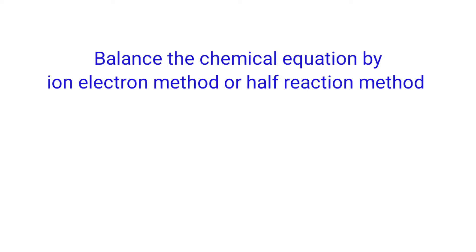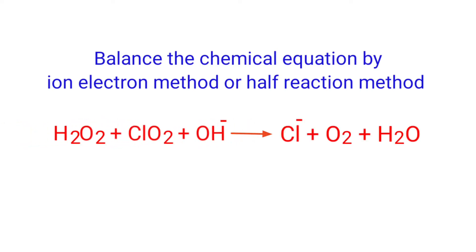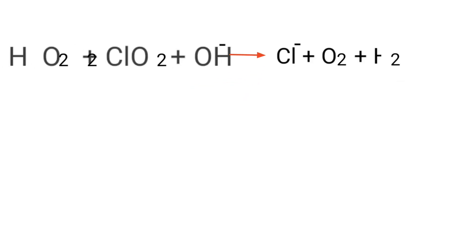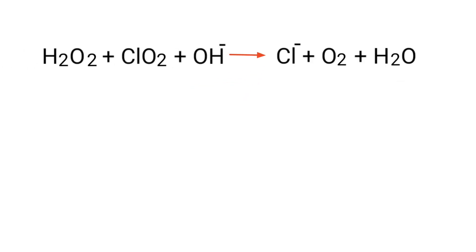Balance the chemical equation by the ion electron method, or half reaction method: hydrogen peroxide plus chlorine dioxide plus hydroxide gives chlorine ion plus oxygen plus water. Identify the reducing and oxidizing agents by the rules of assigning oxidation numbers. In the ion electron method, one reaction is divided into two half reactions, which are then balanced and added together.